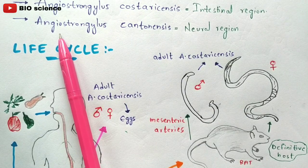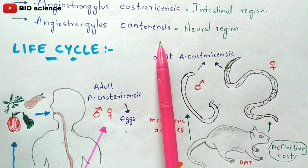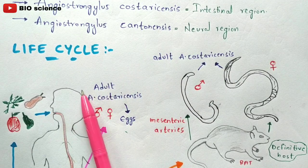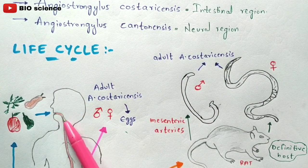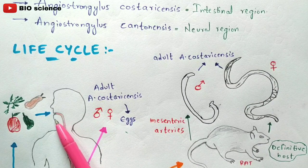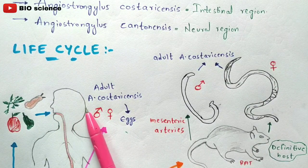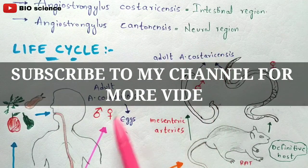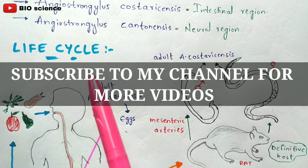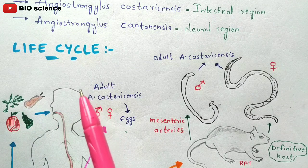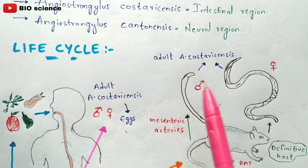If the other parasite, Angiostrongylus cantonensis, infects human beings, it affects the central nervous system, and that particular disease is called neural angiostrongyliasis because it damages the neural region. These are the two parasites involved in angiostrongyliasis, causing damage to human beings in two regions: the intestinal region and the neural region.